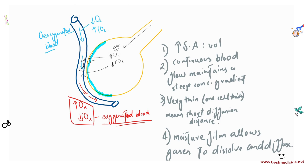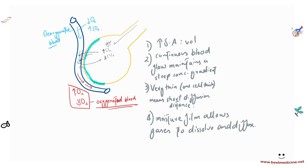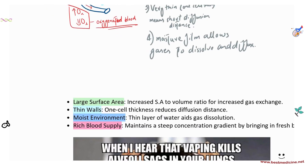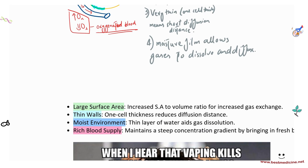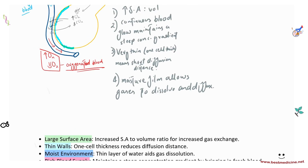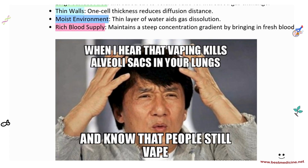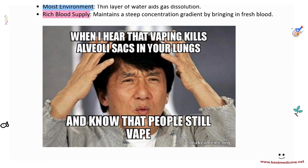To summarize alveolar adaptations: large surface area, thin walls for short diffusion distance, a moist environment to dissolve gases, and a rich blood supply to maintain concentration gradients. If a question asks how alveoli are adapted for their function, you can write these four points for full marks.